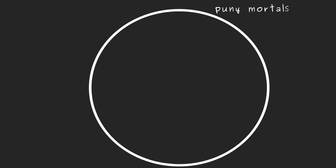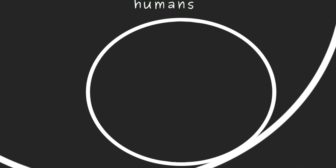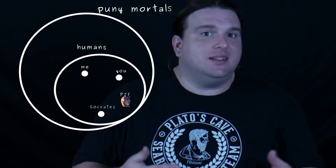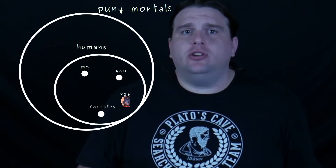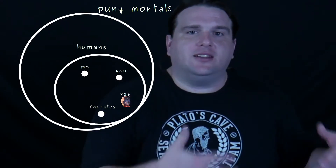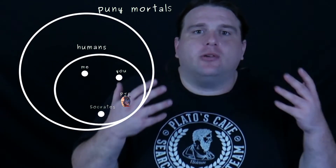Let's look at this another way. The biggest circle, puny mortals, contains all things which are both living, finite, and obviously puny. Within the puny mortal circle is a smaller circle which contains all humans. And within the human circle — which notice is completely within the puny mortal circle — there we find individual dots that include you, me, Socrates, and of course Philip Jose Farmer. One critique of deduction is that it doesn't get us anywhere. We don't actually learn anything new because the conclusion is built into the premises. There is no movement necessary to connect Philip Jose Farmer with puny mortals because he is already contained within it.